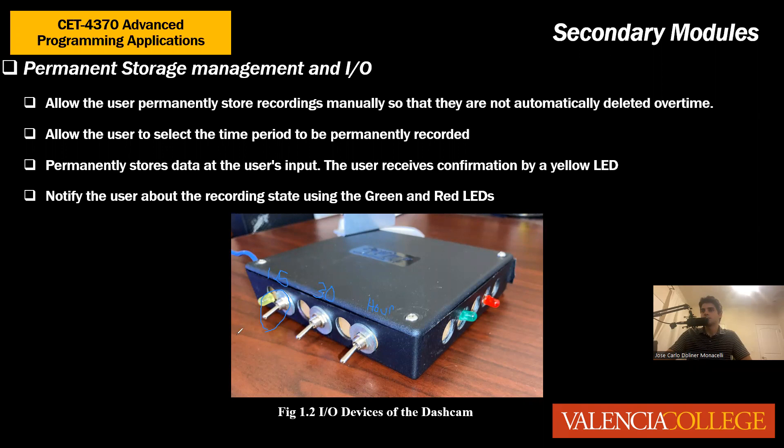Basically, each time a switch is flicked, the system will take a file that is 15 minutes in length — so 15 individual videos — and store them into separate folders where they're kept intact from deletion. That also applies for 30 minutes or one hour.